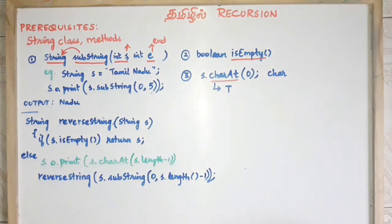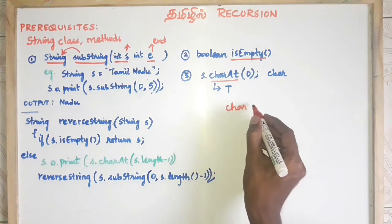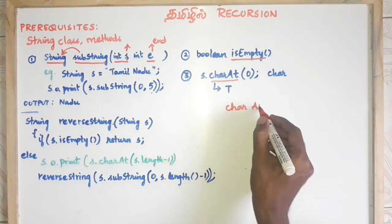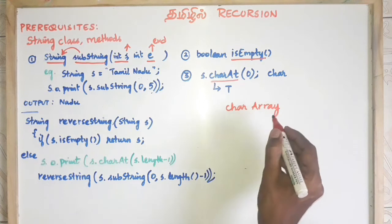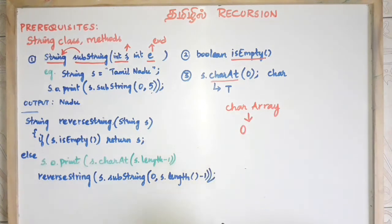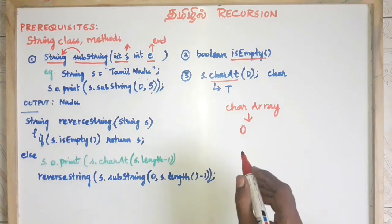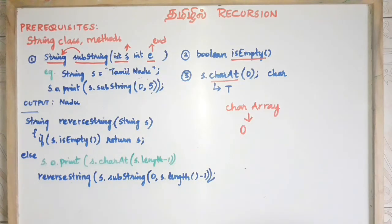You know, string is a character array. We know that a string is a character array, and the character array index starts at 0. This is the starting index and ending index.